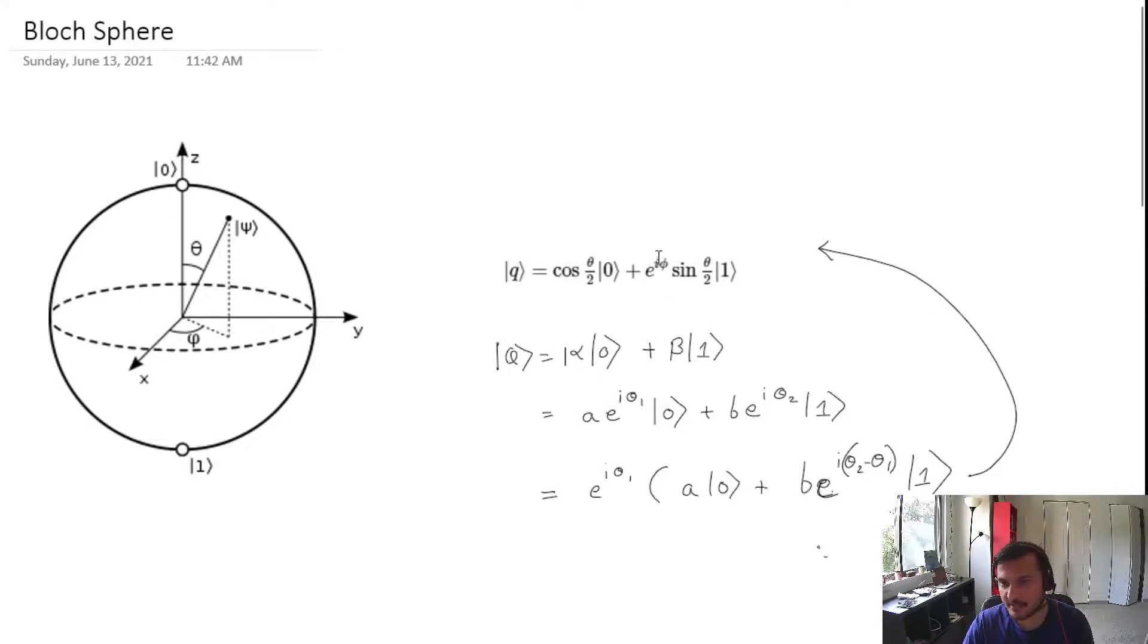The zero state has cosine theta over two, and the one state has sine theta over two and e to the i phi coefficient. So what do these angles theta and phi represent in the context of the Bloch sphere? Theta is this angle from the vertical, so it goes from zero to pi.